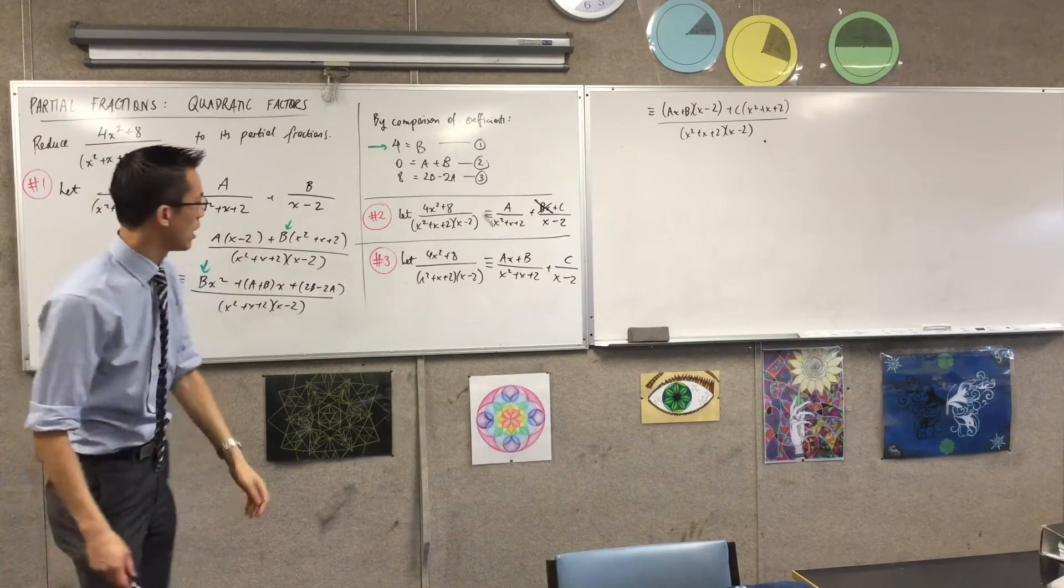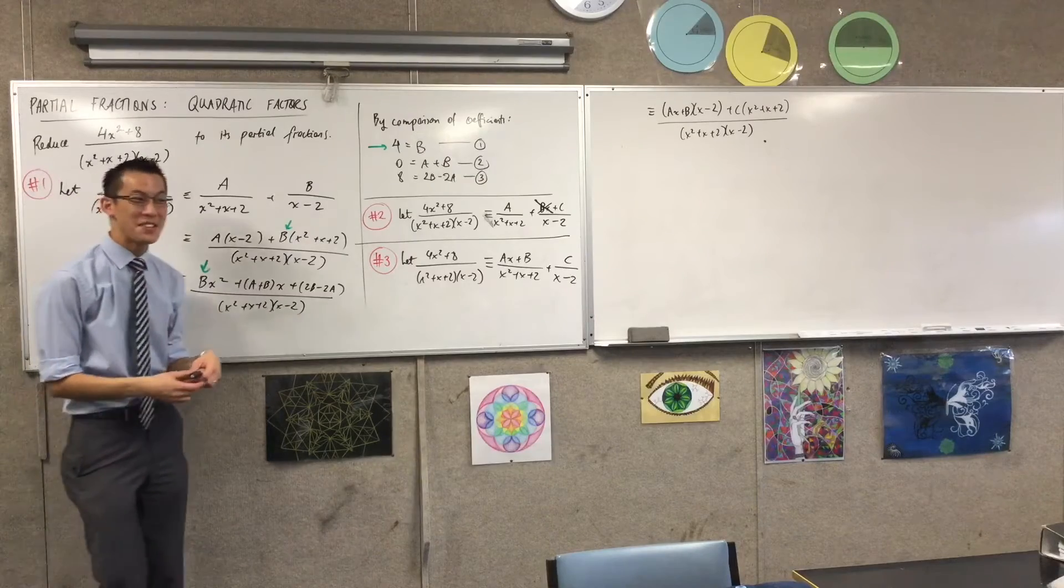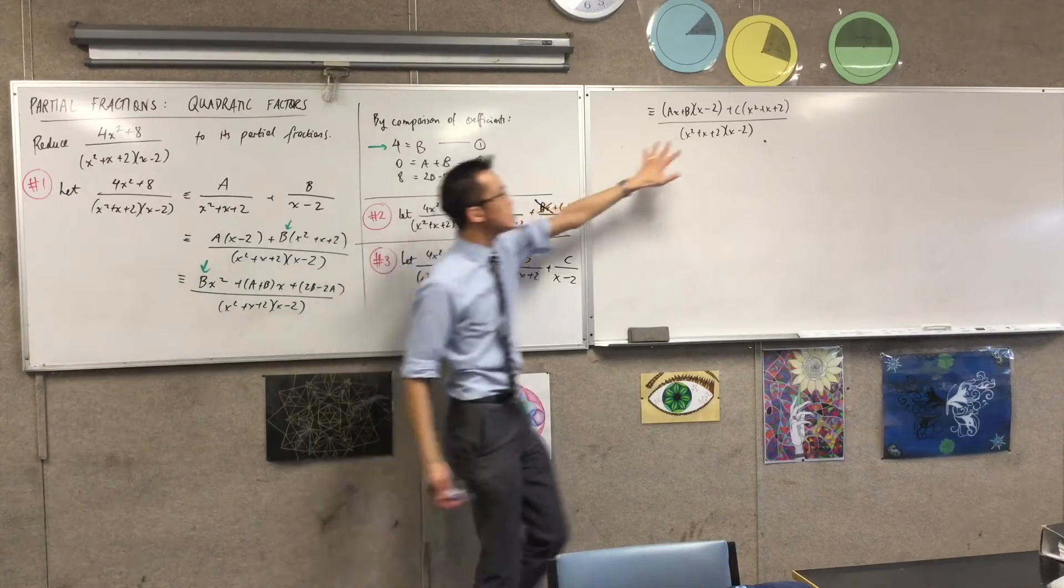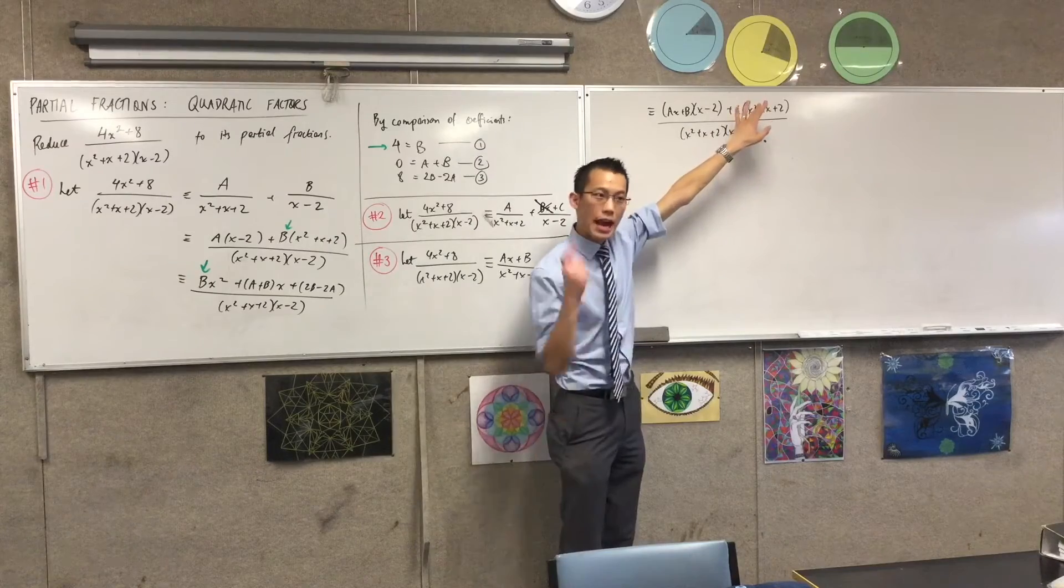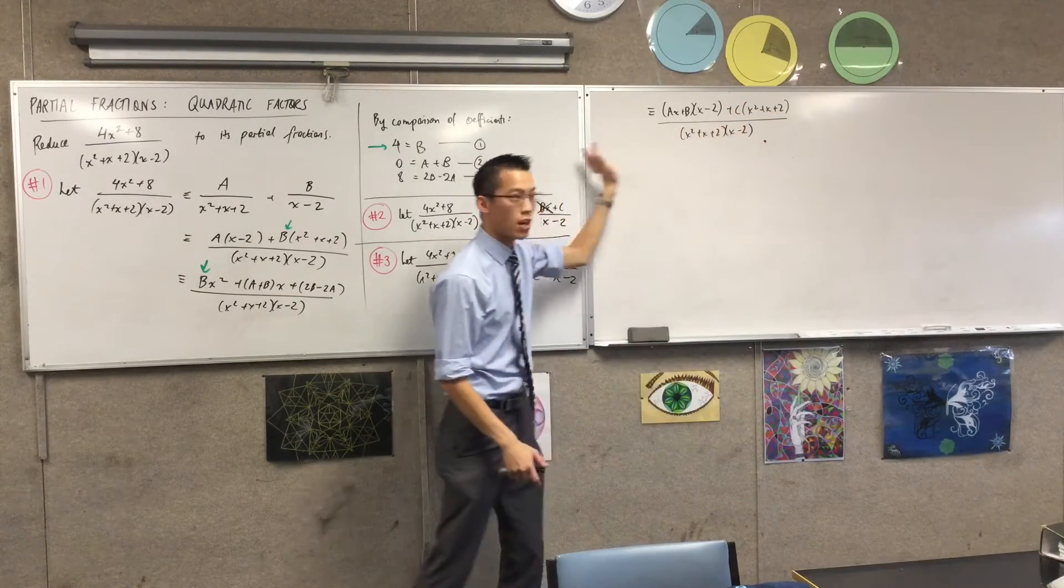But I'm going to take, it was Raynard's suggestion before, I think, to say, sorry, my bad. It was someone's suggestion to say, well, if I have it in this form already, then I can substitute in values for x that will make certain terms disappear.